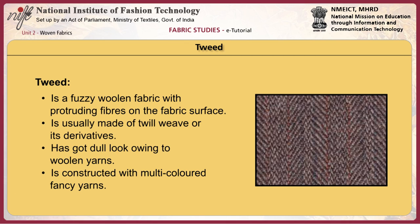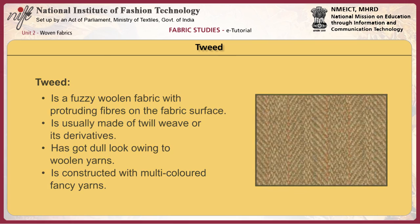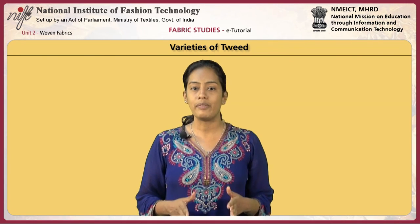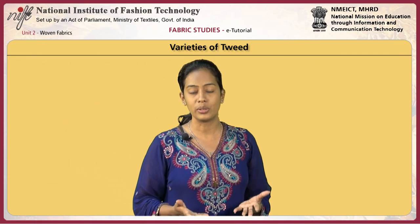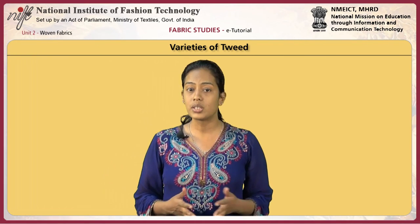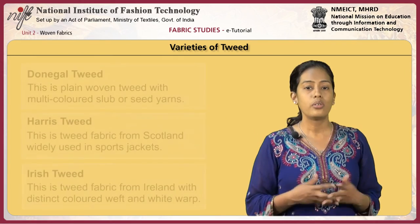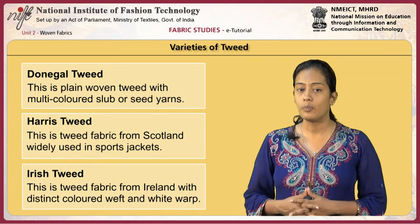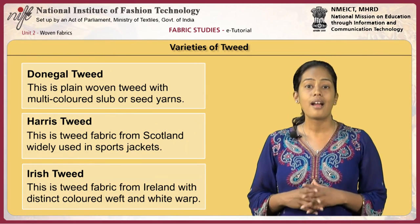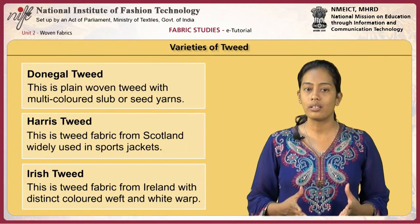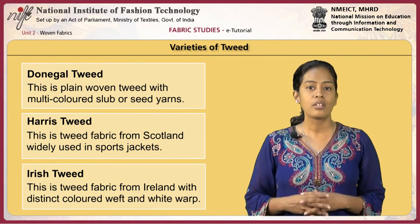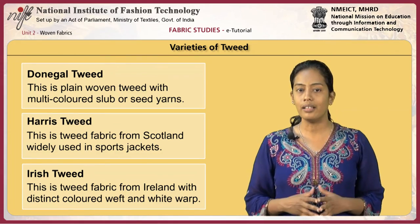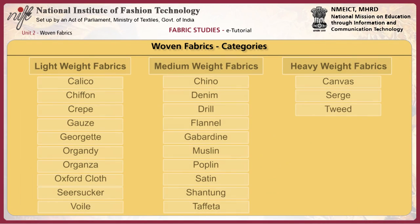Tweed is a fuzzy woolen fabric with protruding fibres on the fabric surface, usually made of twill weave or its derivatives. The fabric has a dull look owing to its woolen yarns and is constructed with multicolored fancy yarns. Tweed being a firm heavy fabric is popularly used in coats and suits. Varieties of tweed include Donegal tweed, Harris tweed and Irish tweed. Donegal tweed is a plain woven tweed with multicolored slub or seed yarns. Harris tweed is a tweed fabric from Scotland widely used in sports jackets. Irish tweed is a tweed fabric from Ireland with distinct coloured weft and white warp.